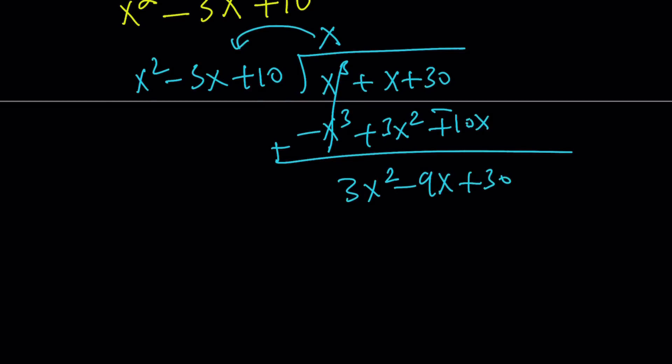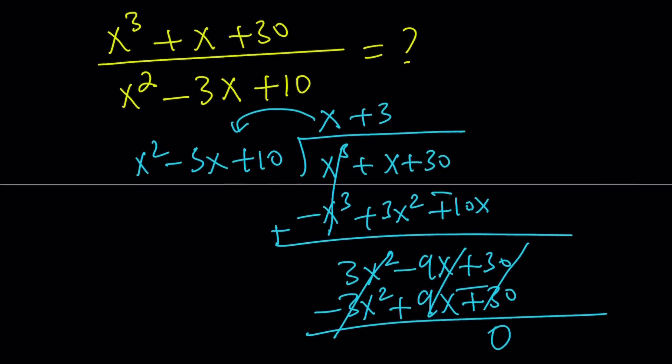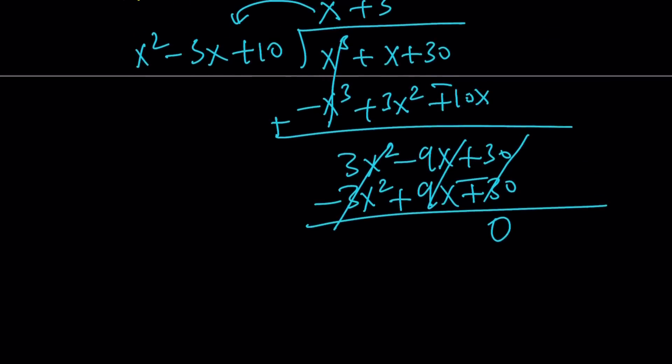And yay, success, because x squared minus 3x plus 10 goes into this exactly three times, and that brings us to the end of the division problem. Not to the end of the video yet, but almost there. And now we have to negate everything, add, and then everything cancels out, and zero is the remainder. This should come as no surprise because we were hoping that it would be divisible, right? Otherwise, this problem would be somewhat pointless.